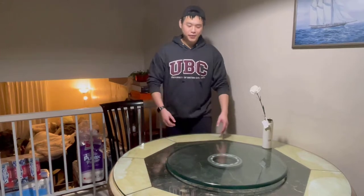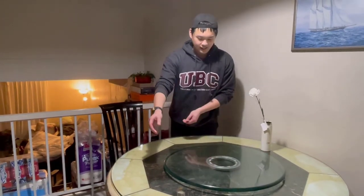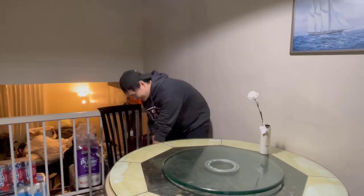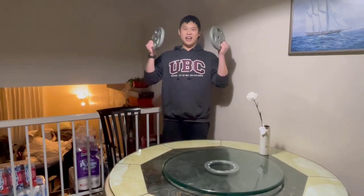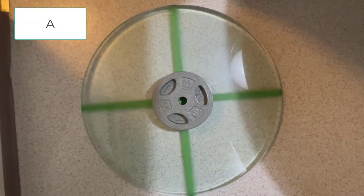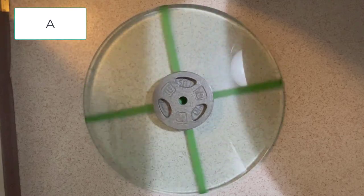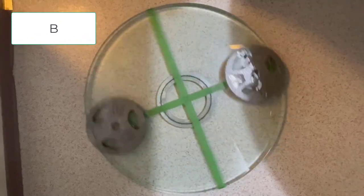We'll be doing an experiment with this turntable and these two 10 pound weights. In configuration A we'll put both plates at the center of the turntable. Then in configuration B we'll put the plates on the edges of the table.